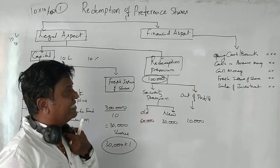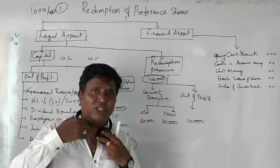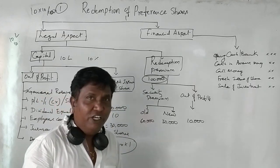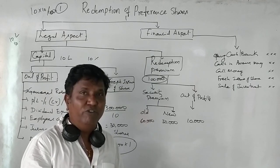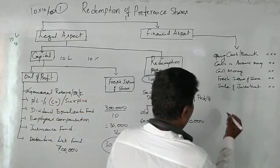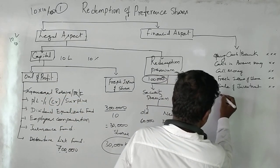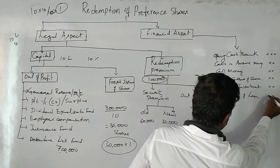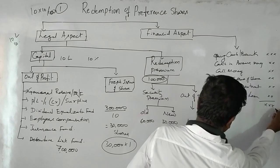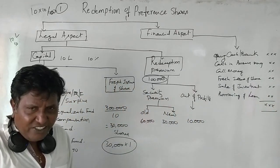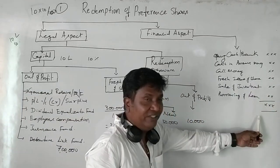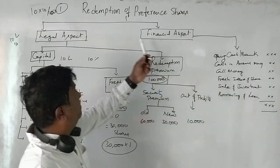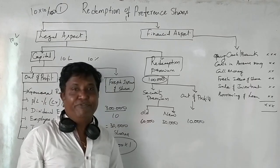If we don't have any investment to sell, as a last option, we can even borrow a loan from financial institutions — borrowing of loan. Using all these sources, we can raise the finance, and with the help of these financial arrangements we can pay off or redeem the preferential capital.